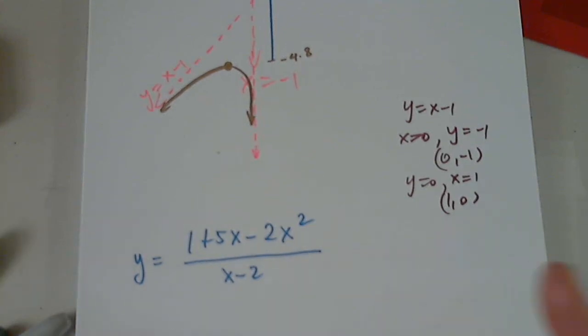Because the degree of the numerator is exactly by one unit higher than the degree of the denominator, this is typical for a slant asymptote.